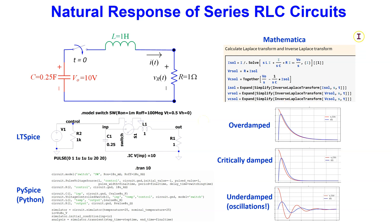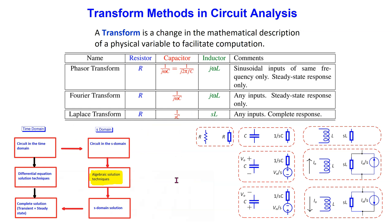Hello everyone. In this video we will discuss the natural response of a series RLC circuit. Recall that in the natural response there is no external DC source — it is the nature of the circuit itself, the capacitor, inductor, and resistor, that determine the circuit behavior. The natural response of a series RLC circuit involves three different cases. In this video I will show you how we can use Mathematica and Python to automatically calculate the theoretical results and compare with simulations using LTSpice or Python. This helps to develop a deeper understanding of the natural response of series RLC circuits.